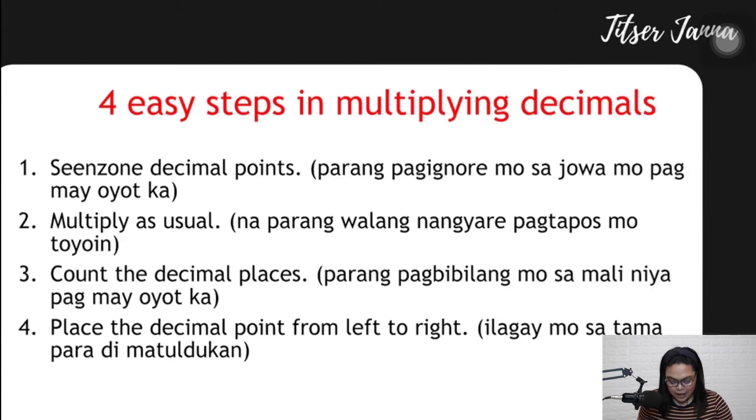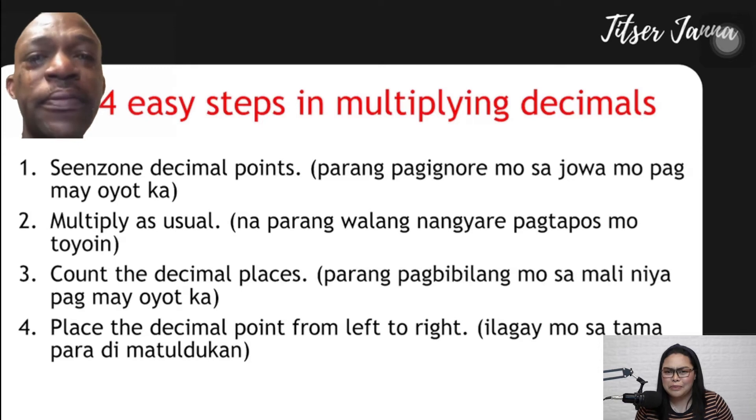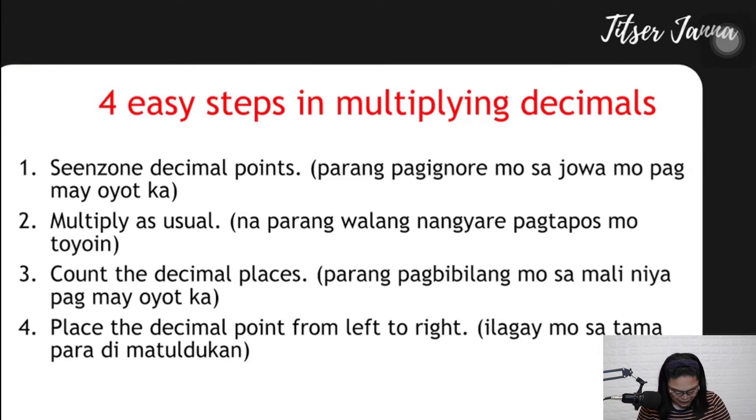How do you multiply decimals? There are four easy steps. First, ignore the decimal points - just like when you ignore your partner when you're mad because they went out. Right? Multiply as usual. And count the decimal places. After you count the decimal places, you place the decimal point from left to right.